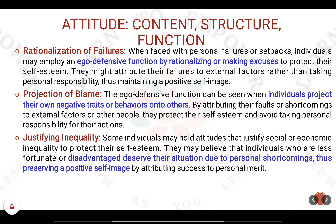Next is rationalization of failure. The ego defensive function kicks into rationalization. For example, if you ask somebody why they did not study for the examination, they won't admit it. Instead, they will say they couldn't sleep the night before because dogs were barking in their area. They blame somebody else — the projection of blame and the rationalization of failure are both interlinked. They won't accept their negative traits; rather, they project them onto others.